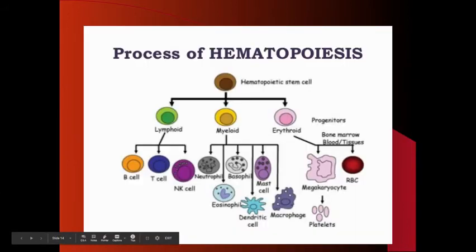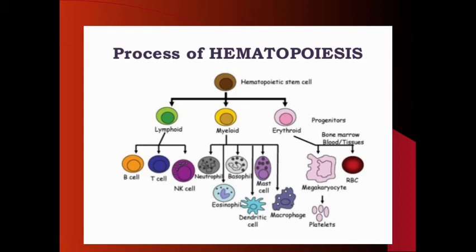These stem cells are originally undifferentiated, and then they'll get specific signals that will tell them to develop into certain types of cells — whether we need more red blood cells for oxygen transport, more white blood cells for fighting infection, or more platelets to function in blood clotting. Depending on the signal that the stem cells in the bone marrow are given, they will develop into the specific kind of cells that are needed.